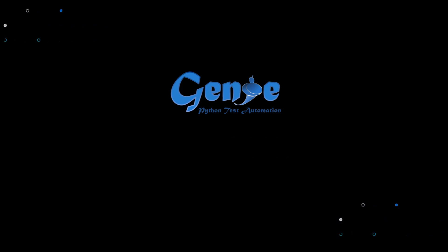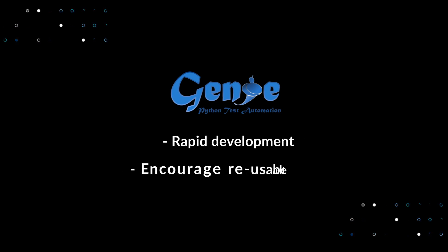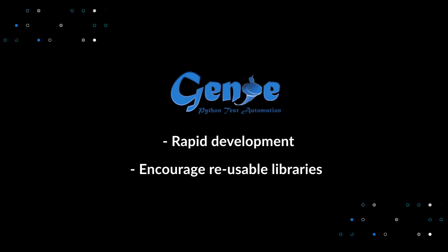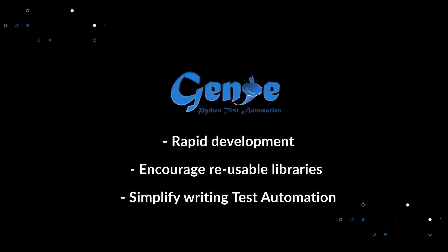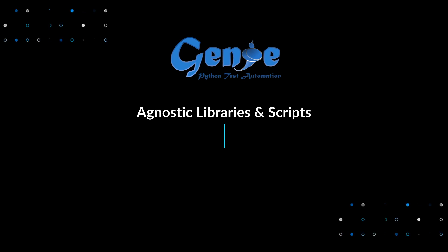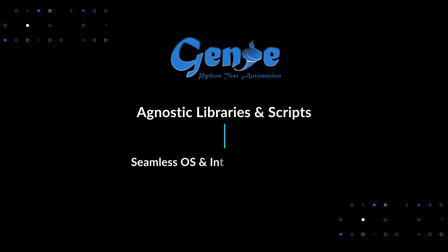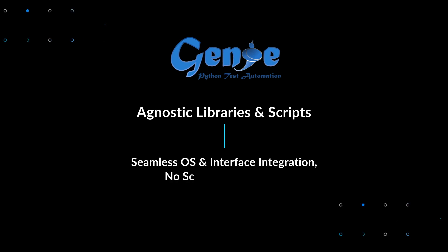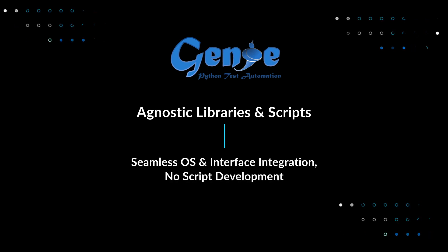The main goals of Genie are to facilitate rapid development, encourage reusable libraries, and simplify writing test automation. Genie consists of agnostic libraries and scripts equipped to handle the different OS, platform, feature release, and management interface without having to develop a new script each time.